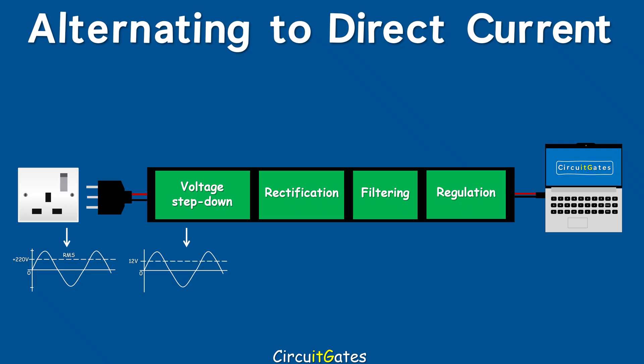The second stage is rectification. At rectification, you are changing alternating voltage to DC pulsating voltage. Alternating voltage is voltage that crosses the zero axis, or voltage varying in magnitude and changing direction. Pulsating voltage is voltage that varies in magnitude but flows in the same direction.